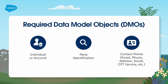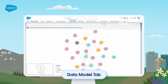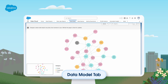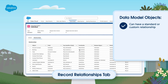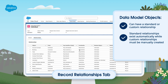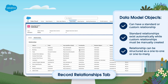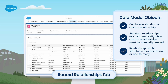Now let's discuss how to determine data relationships between objects. When mapping in Data Cloud, it is vital to understand and define the relationships between data model objects. By establishing these relationships, we can connect and retrieve related data more efficiently and include this data in segmentation and activation. A data model object can have a standard or custom relationship with other data model objects. A standard relationship automatically exists but is inactive until the related fields are mapped, while a custom relationship must be manually created. The relationship can also be structured as a one-to-one or many-to-one relationship.